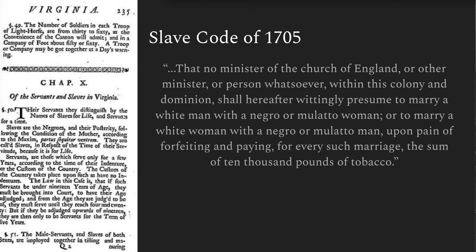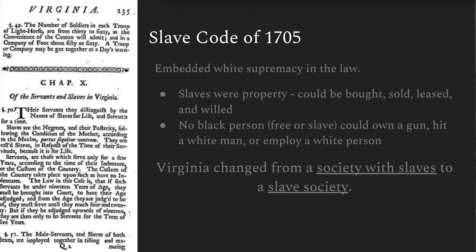What we see here is a clear move to try to very distinctly divide the population between white and black. Any blurring of those races was seen as a threat to society. By this point, Virginia had changed from a society with slaves to a slave society — in other words, a society that could not exist without slavery, whose entire economic foundation was built upon the institution.